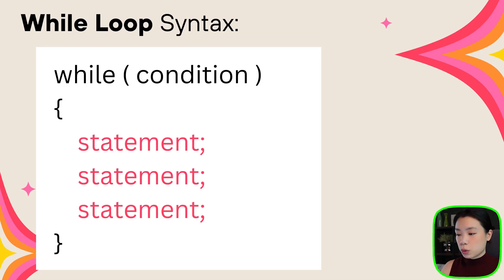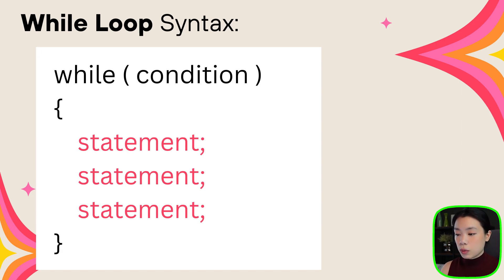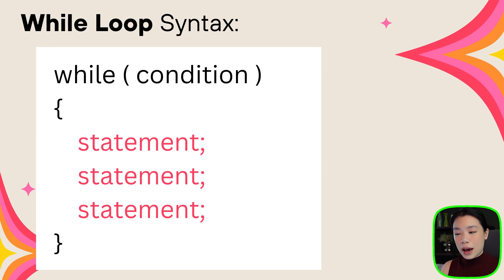First, let's look at the while loop syntax. As you can see here, we have the word 'while', and then in the parentheses we have a condition. A condition is like we learned before — we can put a boolean expression in here. Then we have a curly bracket, and within the curly brackets are the instructions that we want to repeat. You might realize that it's very similar to something you've seen before, which is an if statement. We just changed the word 'if' to 'while', but actually an if statement and a while loop have very different ways of working.